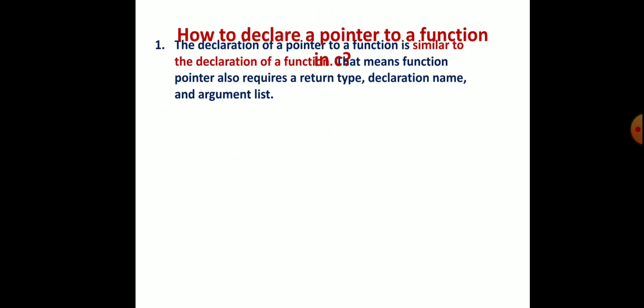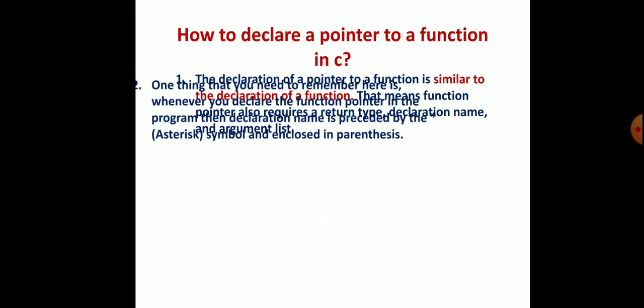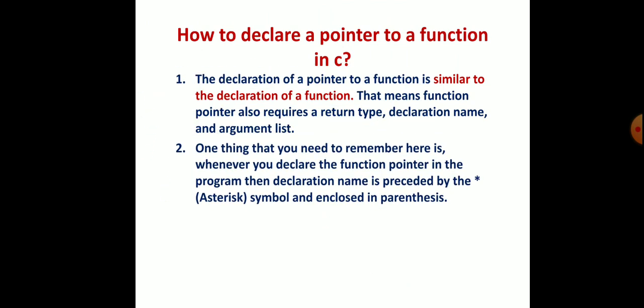How to declare a pointer to a function in C? The declaration of a pointer to a function is similar to the declaration of a function. That means the function pointer also requires the return type, declaration name, and argument list. Let's have a syntax and explanation for this.